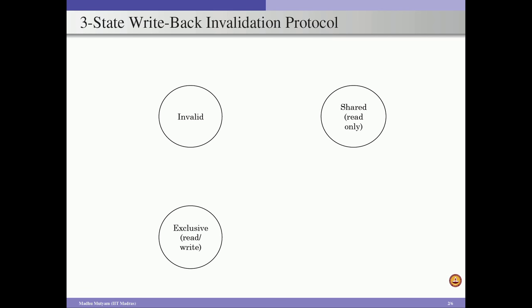Consider a scenario where core 4 wants to read some data. It issues a CPU read request and the cache finds a miss. Core 4 incurs a CPU read miss and the cache replacement policy selects a victim block. Assuming the victim block location is in an invalid state, we have to change the state of this location from invalid to shared — that is what is represented by this transition. Because core 4 incurs a read miss, the cache controller places a read miss transaction for this address on the bus.